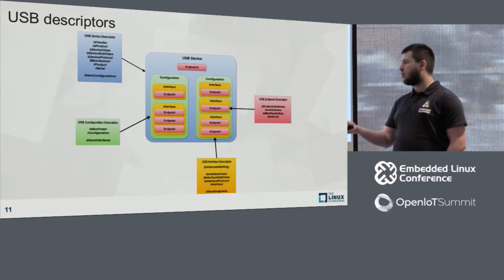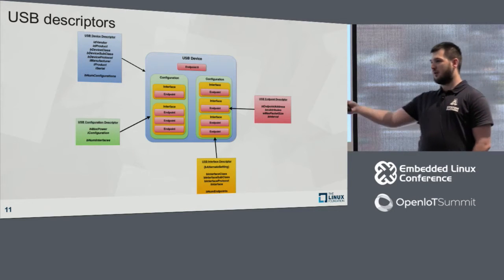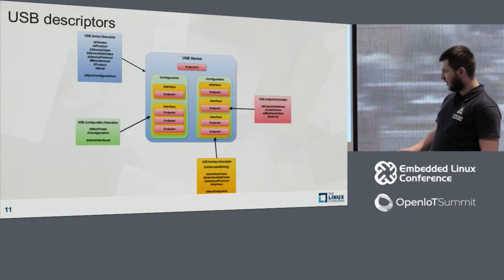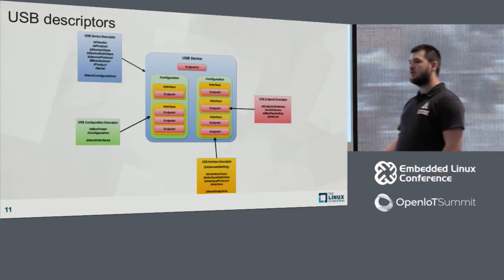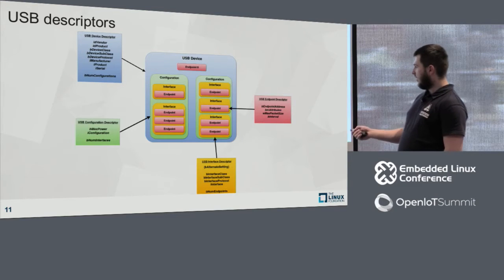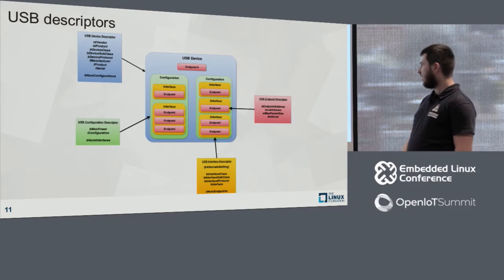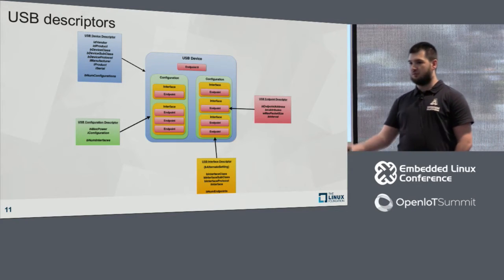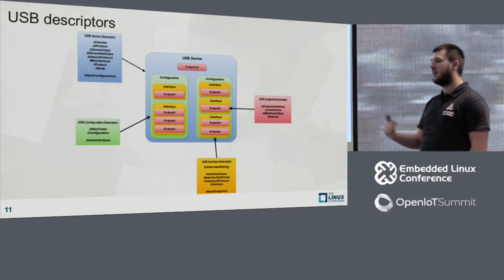The descriptor also provides information about the number of available configurations. Each configuration specifies how much power the device needs from the host and the number of interfaces. Interfaces include class information and a string describing the interface functionality. The endpoint descriptor defines the endpoint address, type (bulk, interrupt, or isochronous), and maximum packet size.